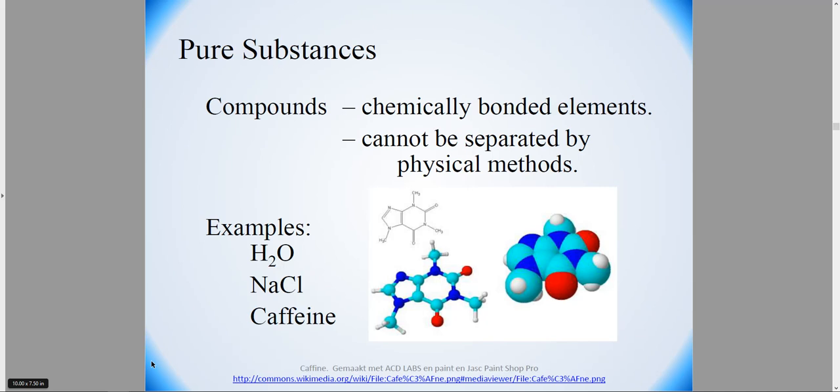Another type of pure substance is called a compound, and this is two or more elements chemically bonded to each other. So hydrogen is bonded to oxygen. Sodium is bonded to chloride, or caffeine, which contains carbons and oxygens and nitrogens and hydrogens. Here you can see it chemically, and here it's the ball and stick model, but both of these are caffeine.